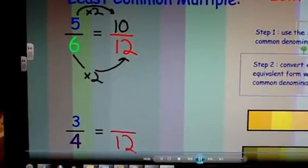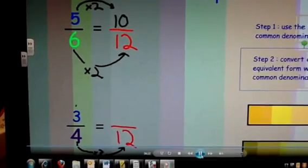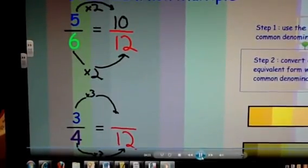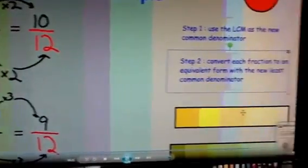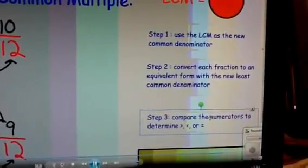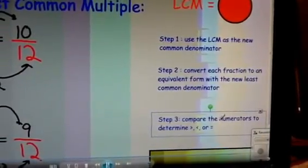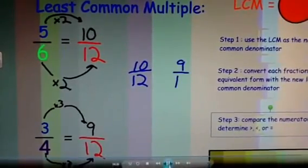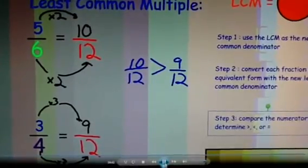On the bottom, we have four times three equals twelve. So we will also do the same to the numerator to form the new numerator of nine. Now let's check the next step. Step number three: compare the numerators to determine greater than, less than, or equal to. So when I look at ten-twelfths and compare it to nine-twelfths, I can say ten-twelfths is greater than nine-twelfths.